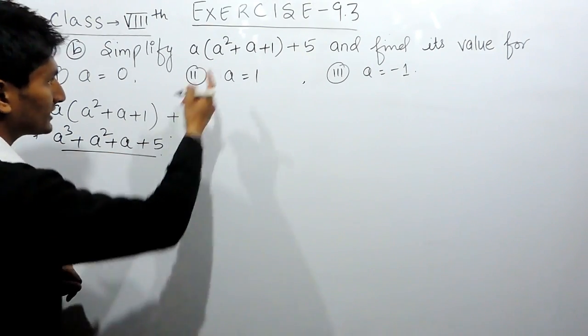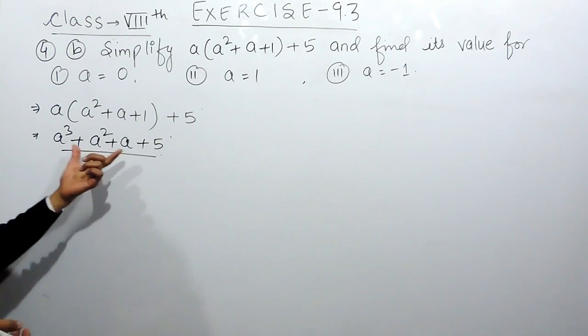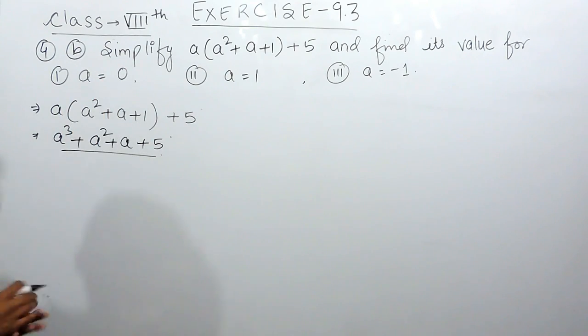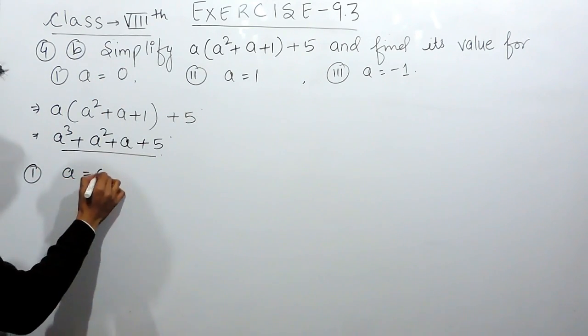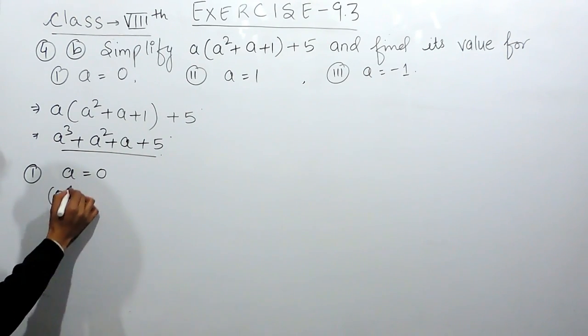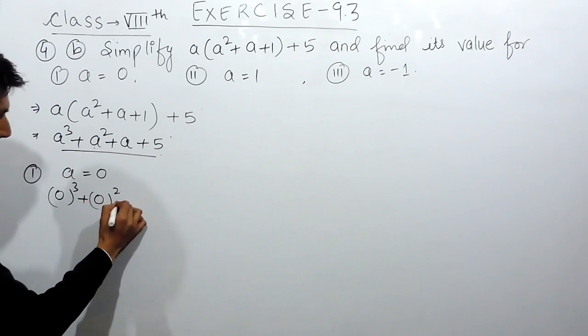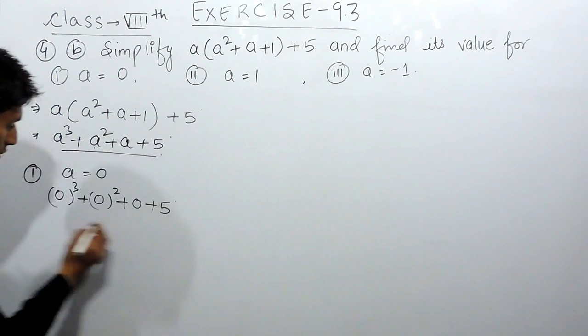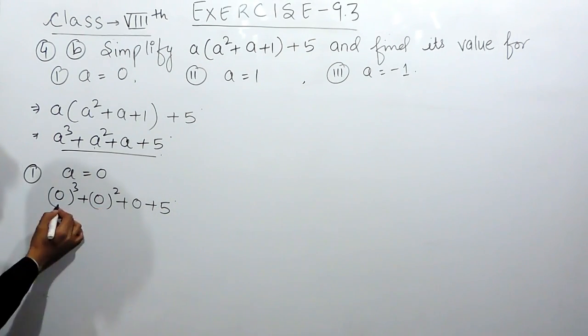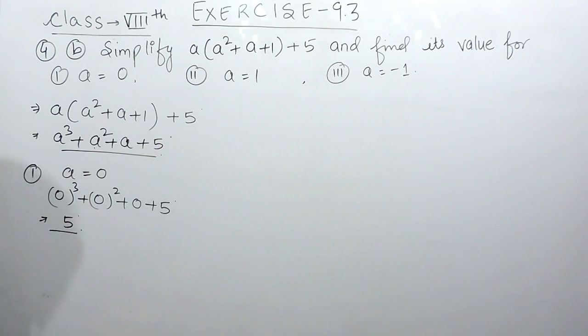So this should be the value of this expression when we simplify it. Now you have to find the value of this expression when the value of a is 0. We have to substitute the value of a as 0 in this expression. So if I substitute, this will be 0 cubed, this will be 0 squared, this will be 0 plus 5. So 0 cubed, 0 squared, 0, this will become 0 and the value of this expression equals 5.